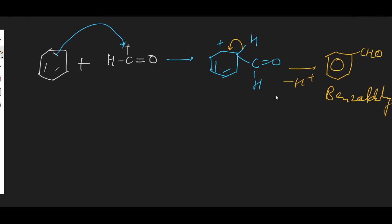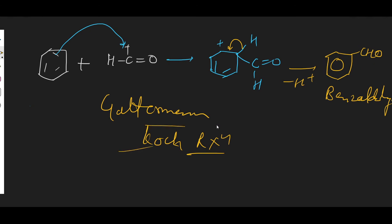This is the Gattermann-Koch reaction, in which formylation is carried out using a carbon monoxide and HCl mixture in the presence of AlCl3. I hope you have understood the Gattermann-Koch reaction. If you have any doubts, please ask in the comments.